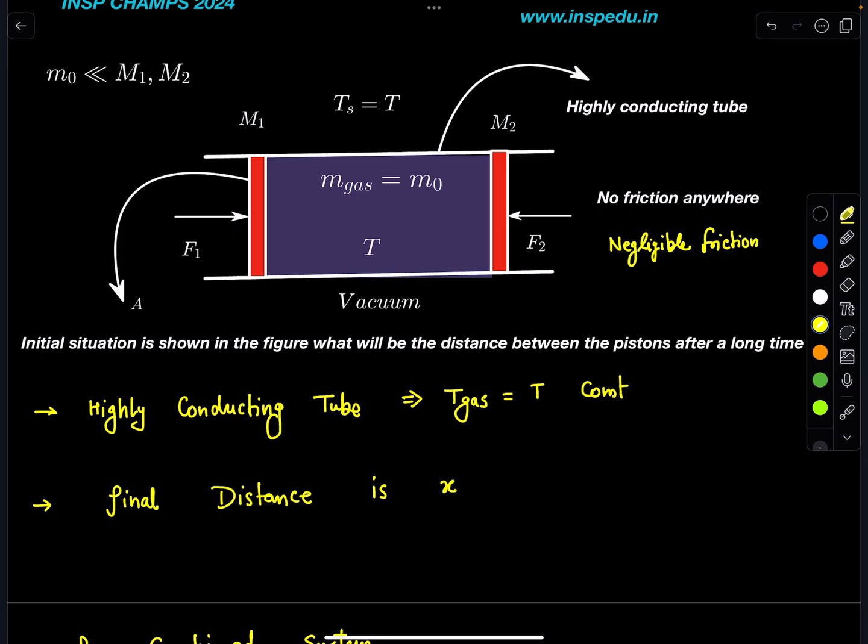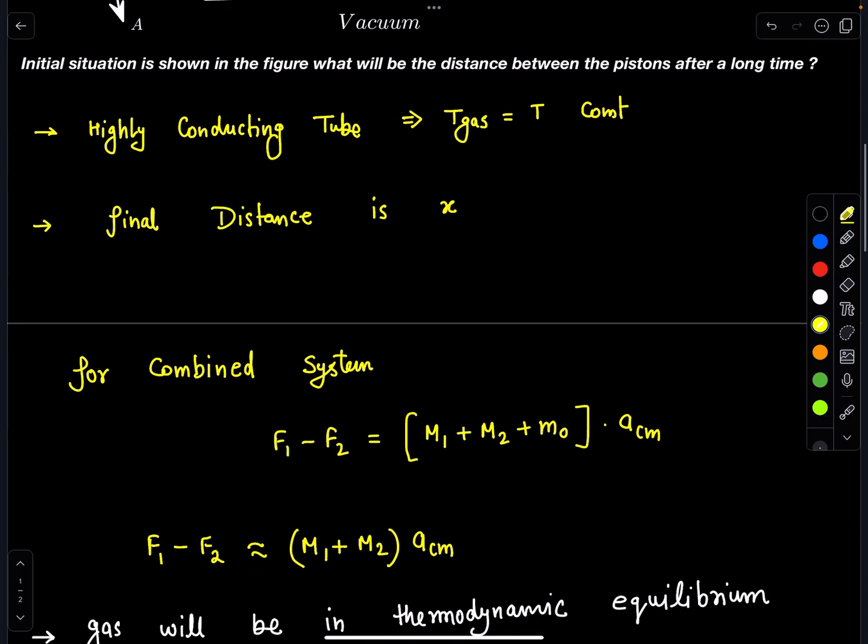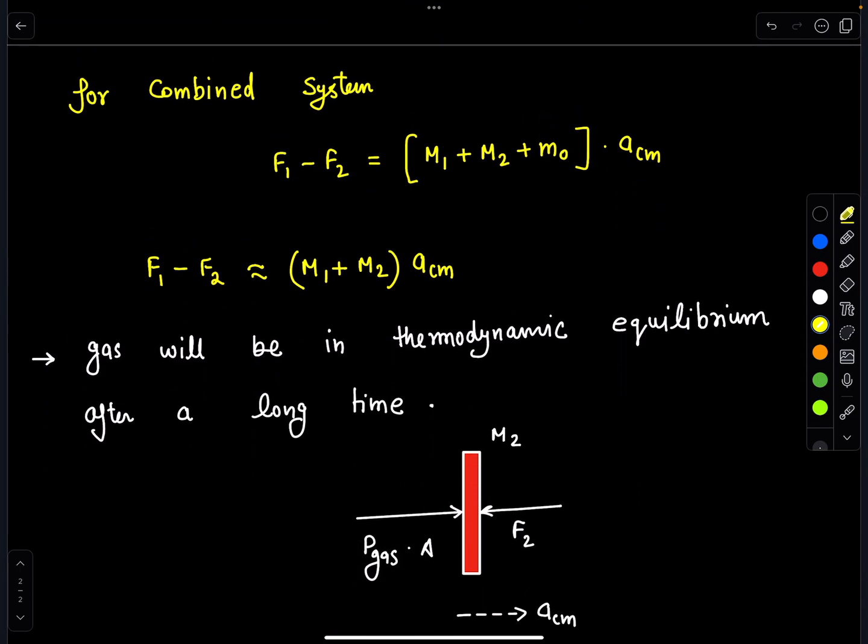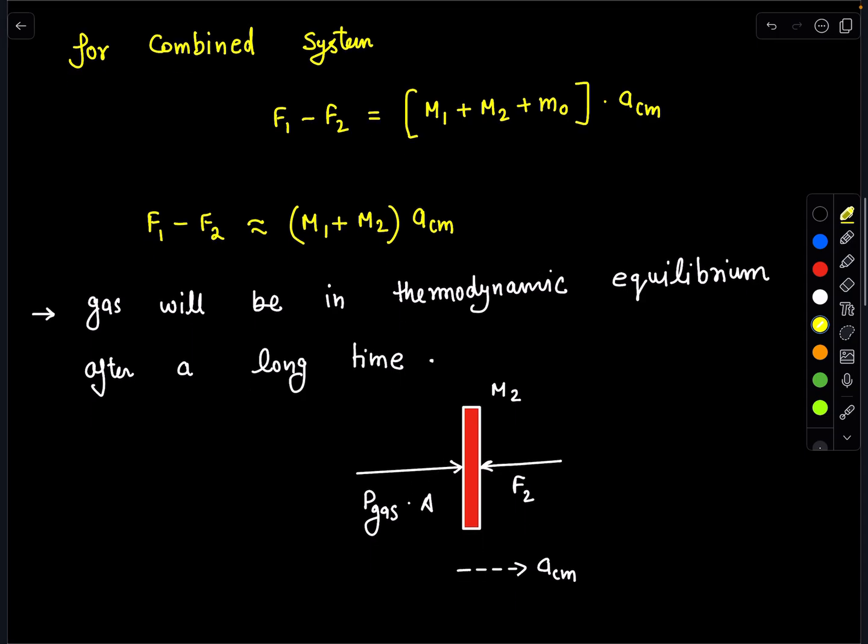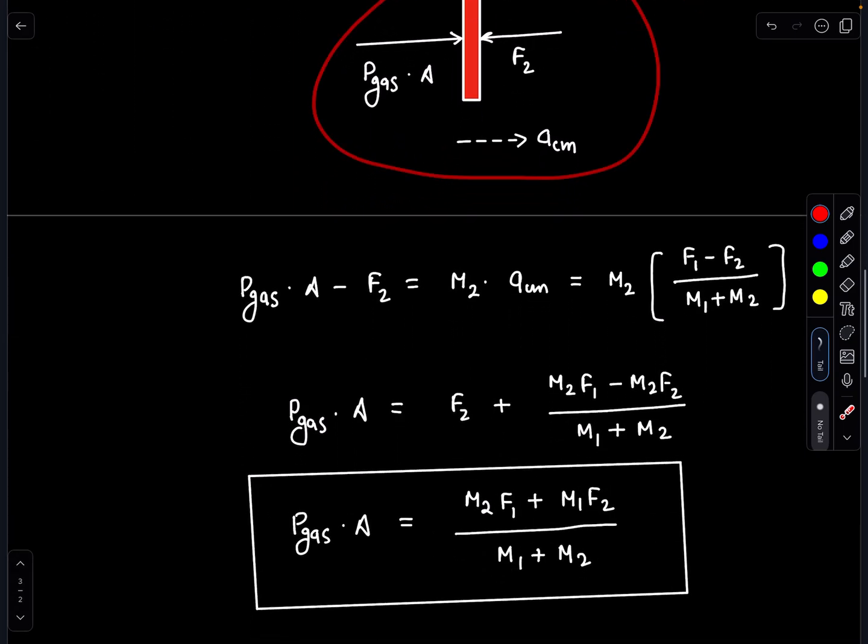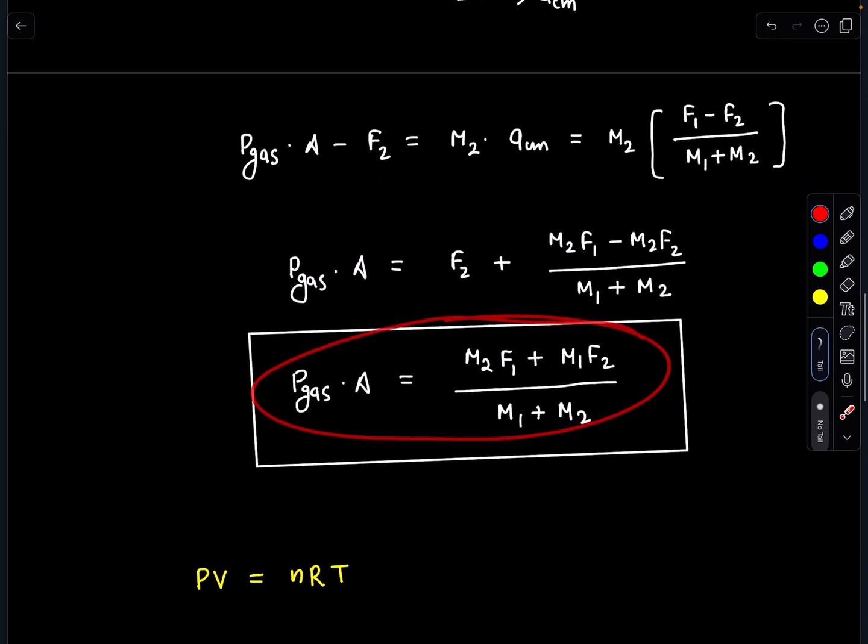Due to which the steady state value we are getting, gas comes into thermodynamic equilibrium after a long time. In that situation, by ignoring friction, we can say forces on this are going to be balanced. When you substitute the value F equals ma, we are getting P_gas times A as M2F1 plus M1F2 divided by M1 plus M2.